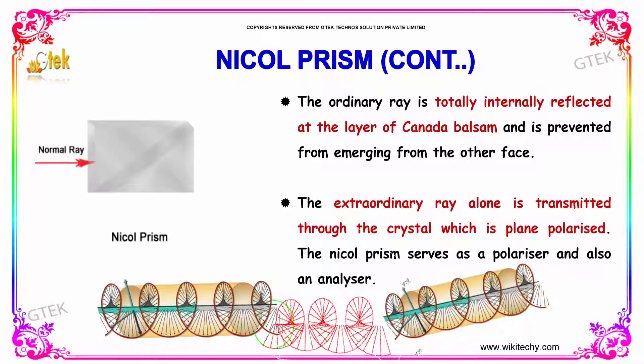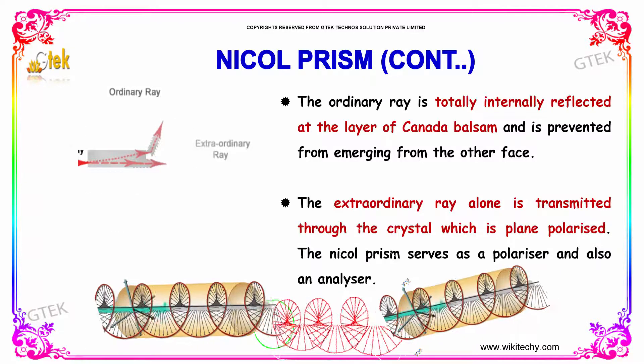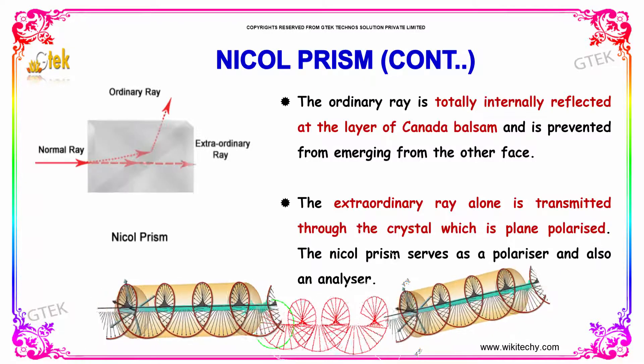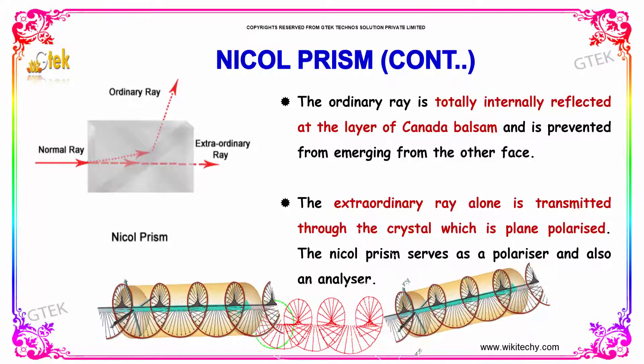The ordinary ray is totally internally reflected at the layer of Canada balsam and is prevented from emerging from the other face. The extraordinary ray alone is transmitted through the crystal, which is plane polarized. The Nicol prism serves as a polarizer and also as an analyzer.